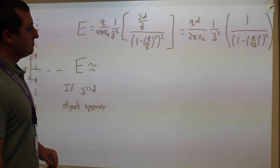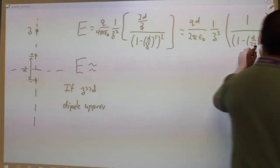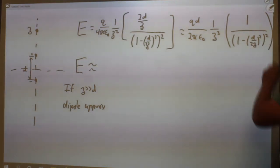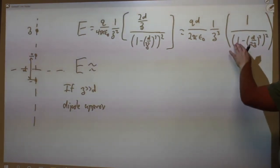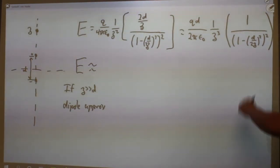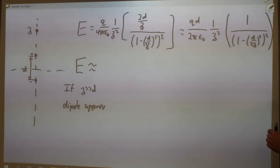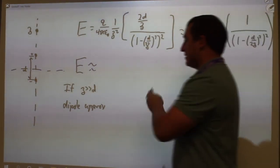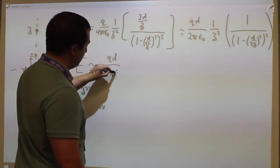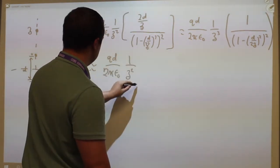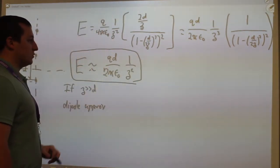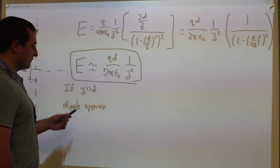In that case, d/2z is basically zero. So I get one minus a very small number squared — even smaller — and then that number is almost one and I square it, so it's even closer to one. It's a very good approximation because you have two squares here. And in that case this entire term is one, and E is approximately qd over 2πε₀ times 1 over z³. This is the electric field around a dipole, either exact or using the dipole approximation.